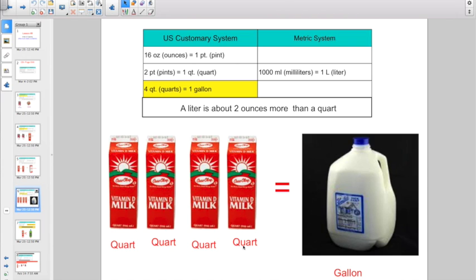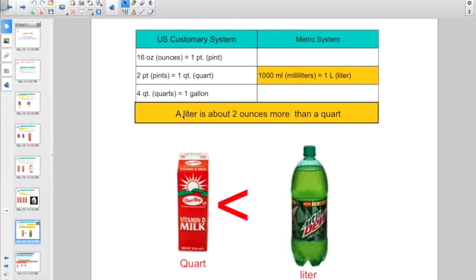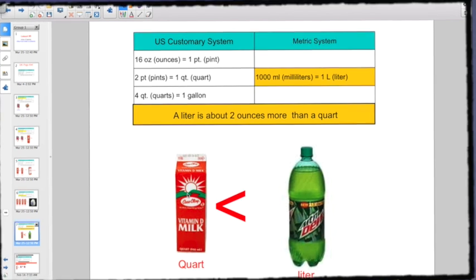And four quarts is equal to one whole gallon jug. What do you think this word quart is based off of? Quarter, one fourth, right? And a liter is about two ounces more than a quart, or that there's a thousand milliliters in a liter. A liter is the big, tall bottles of pop. So a little bit more, just two ounces more than a quart.